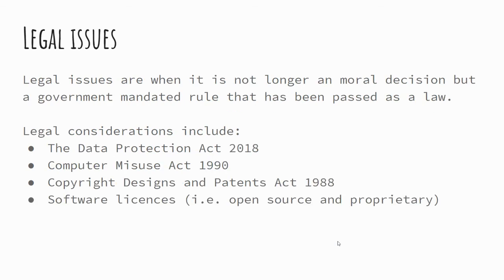Legal issues are where government-mandated rules or passed laws prevent things being used in ways they shouldn't be. We spoke earlier about ethical decisions — that moral decision about whether something is right or wrong — and the legal implications support that as well. There are a number of different laws: the Data Protection Act, the Computer Misuse Act, the Copyright Designs and Patents Act, as well as licensing of software to consider. These are the laws that govern the way we do things, but we may still have ethical or moral decisions to make outside of those.